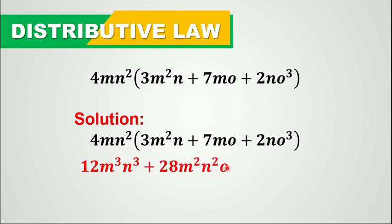And then 4mn squared times positive 2no cubed: 4 times 2 is 8. Copy m because there's no m in the second factor. Then n squared times n is n cubed. And just copy o cubed because there's no o in the first factor. So this is now our answer.